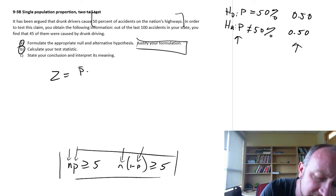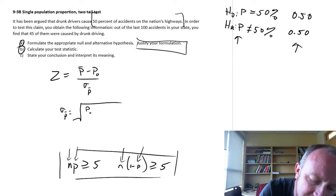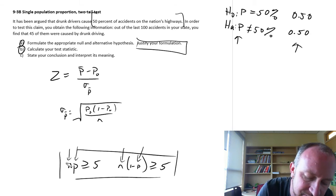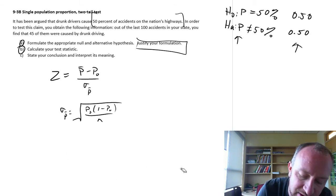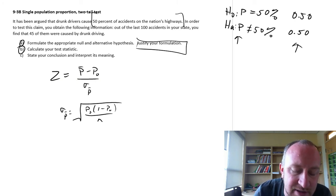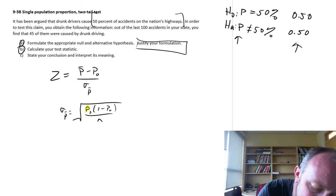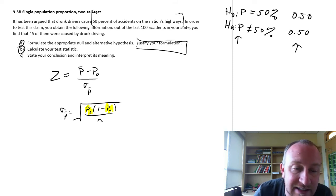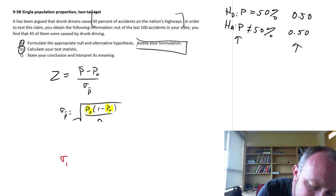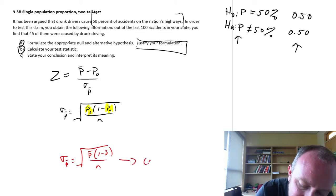So here's our formula, p-bar minus p-naught over the standard error. That standard error is p-naught times 1 minus. Again, in this formula here, make sure that you realize that you notice that the proportion that we're using is the hypothesized value. There is a time and a place to use this formula, p-bar times 1 minus p-bar over n. But that's only for confidence intervals on proportions.